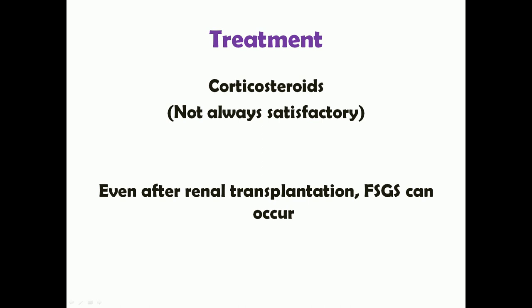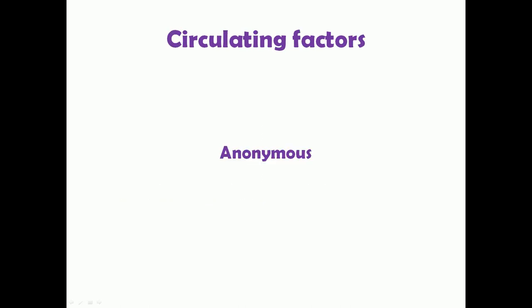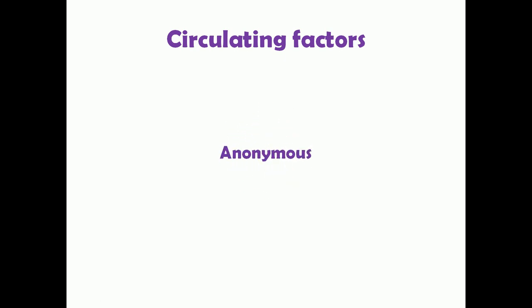For some patients, renal transplantation can be done to help them survive. However, even after transplantation, proteinuria can recur within hours to days, and focal segmental glomerulosclerosis can develop again — thought to be due to those unidentified circulating factors.